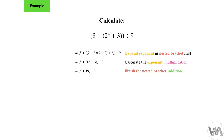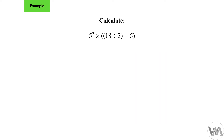Now we still have the larger bracket: 8 plus 19. We add 8 and 19 together to get 27. Finally we have 27 divided by 9 — no more brackets, no more powers or exponents — and we get our answer, which is 3.